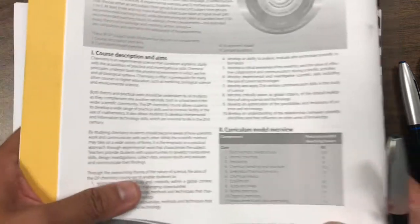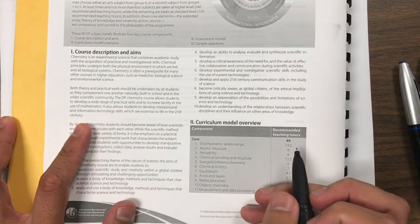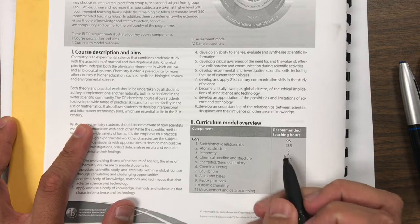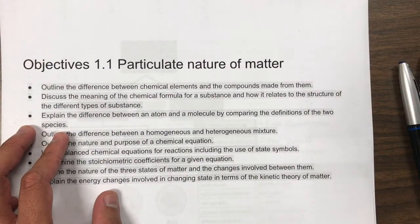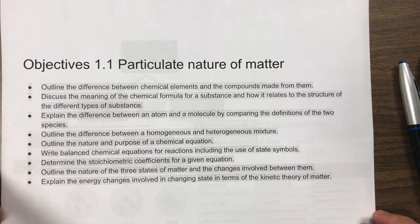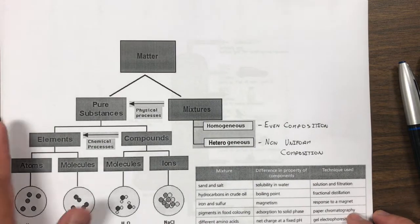Now, stoichiometry, you can see here, stoichiometric relationships is one of the larger topics that's recommended in terms of teaching hours, 13.5 hours, and there really is a lot of it on the IB test. Here are a couple of things that you guys are going to need to know. Let's get right on into it.